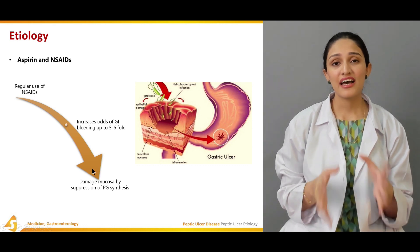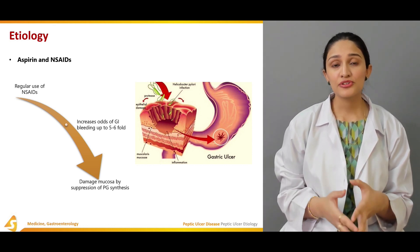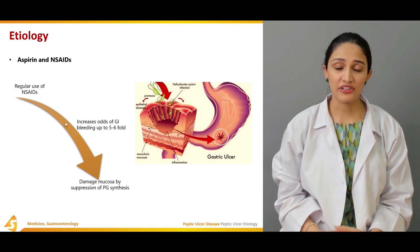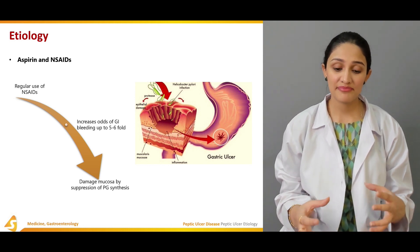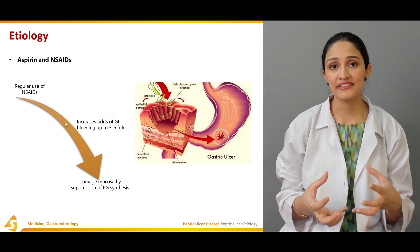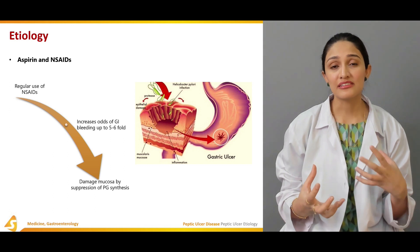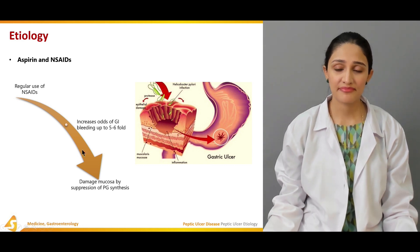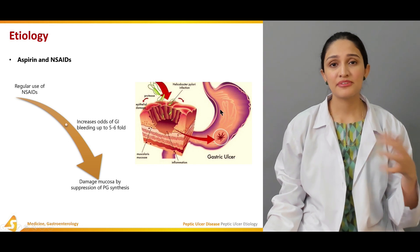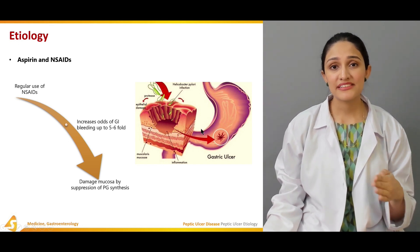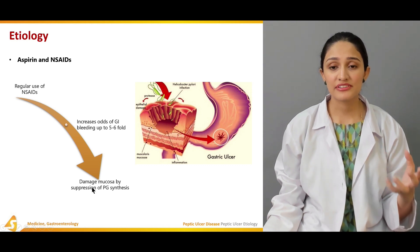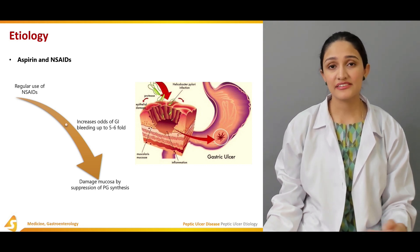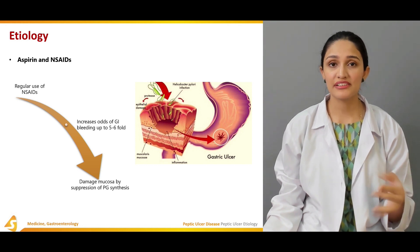Aspirin and NSAIDs are COX inhibitors. COX normally helps in the synthesis of prostaglandins, which are part of the defense mechanism of the stomach and duodenal mucosa. When NSAIDs inhibit COX, they suppress the formation of prostaglandins, which ultimately causes a weakness in the mucosal defense.